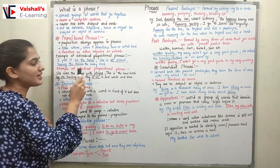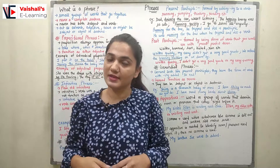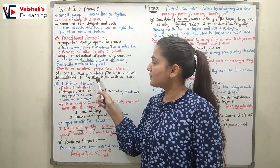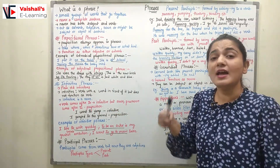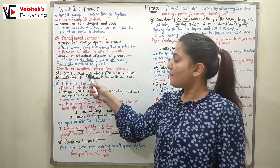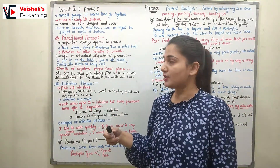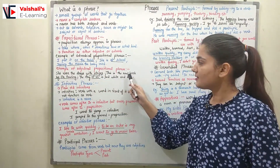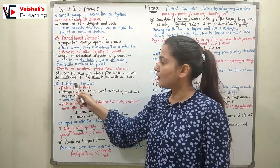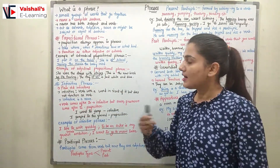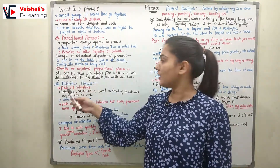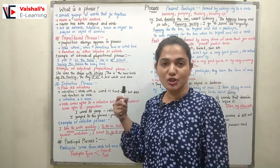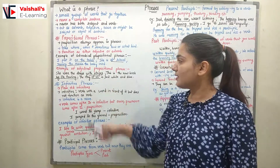Now for adjective prepositional phrase examples: 'She wore the dress with stripes' — 'with stripes' is an adjective prepositional phrase. 'This is the new book by J.K. Rowling' — 'by J.K. Rowling' is an adjective prepositional phrase, telling who the author is. 'The flag of US is red, white and blue' — 'of US' is an adjective prepositional phrase.